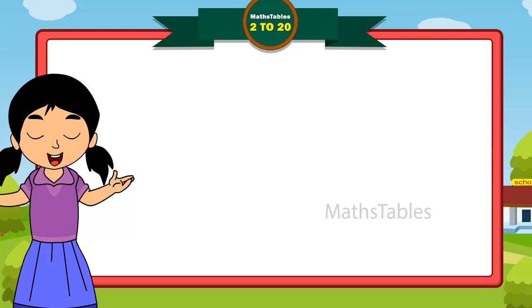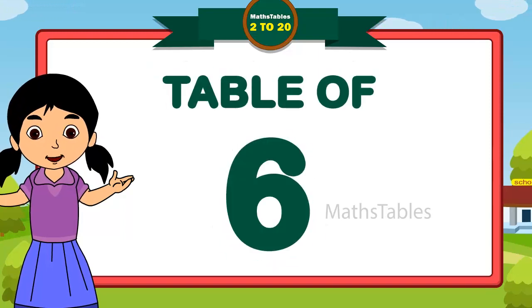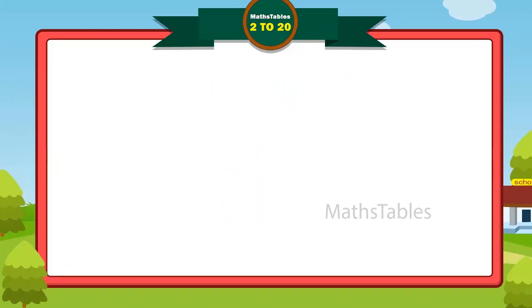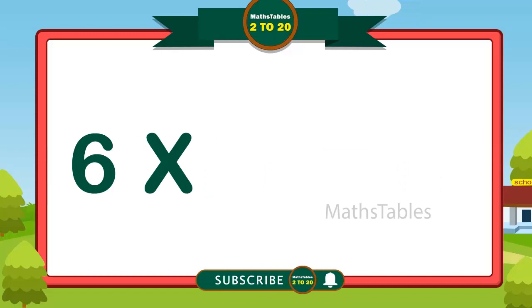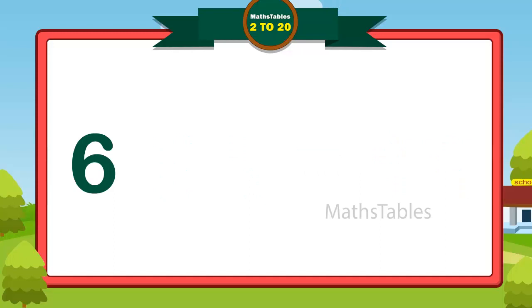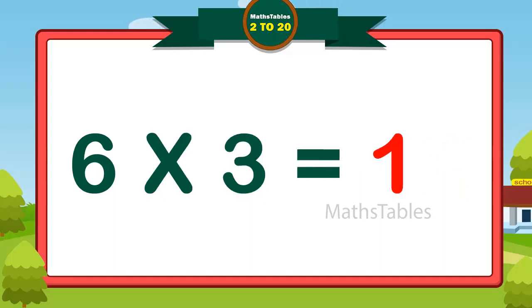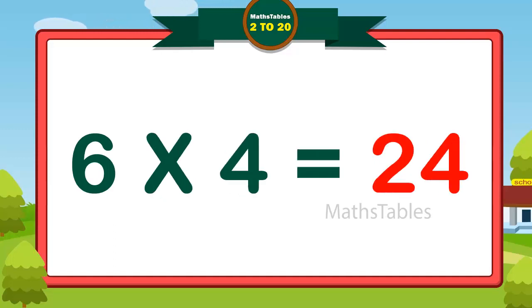Hi friends, now we will learn table of six. Six ones are six. Six twos are twelve. Six threes are eighteen. Six fours are twenty-four.